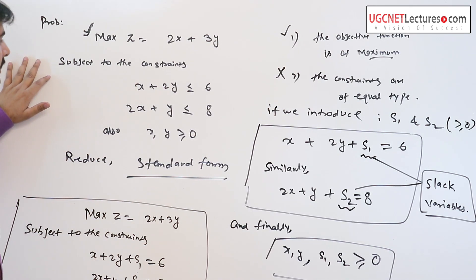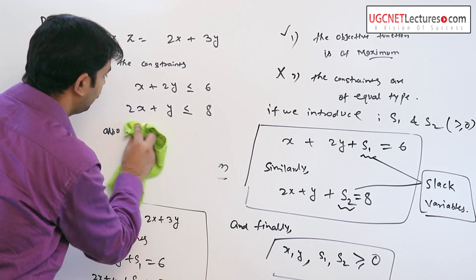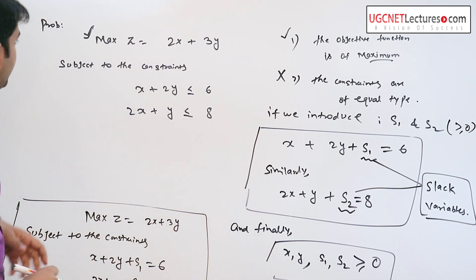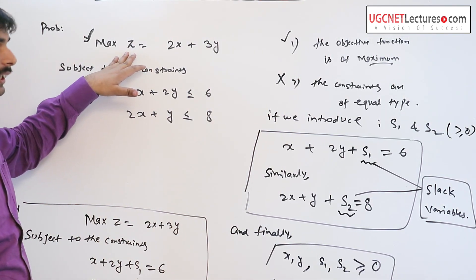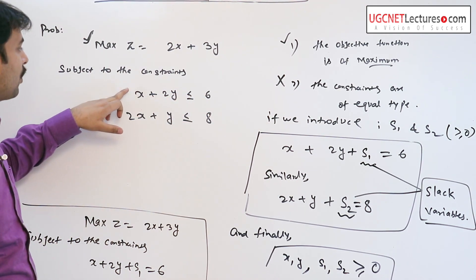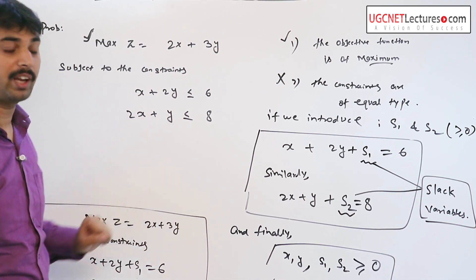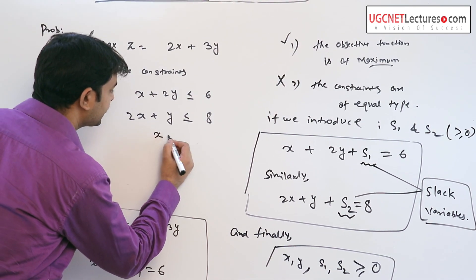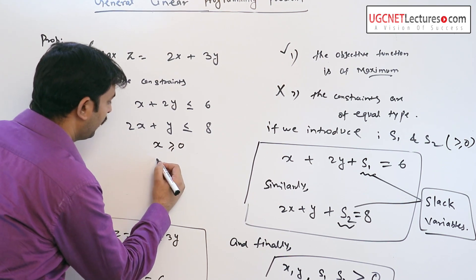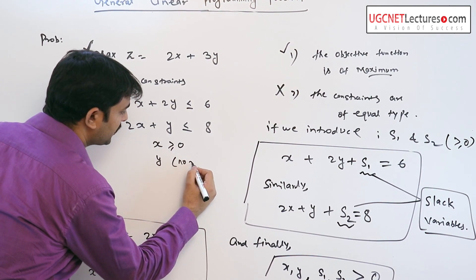Now we discuss the second problem. If the problem is maximization, we have: maximize z equal to 2x plus 3y, subject to the constraints x plus 2y is less than or equal to 6, and 2x plus y is less than or equal to 8, and x is positive and y has no restriction.